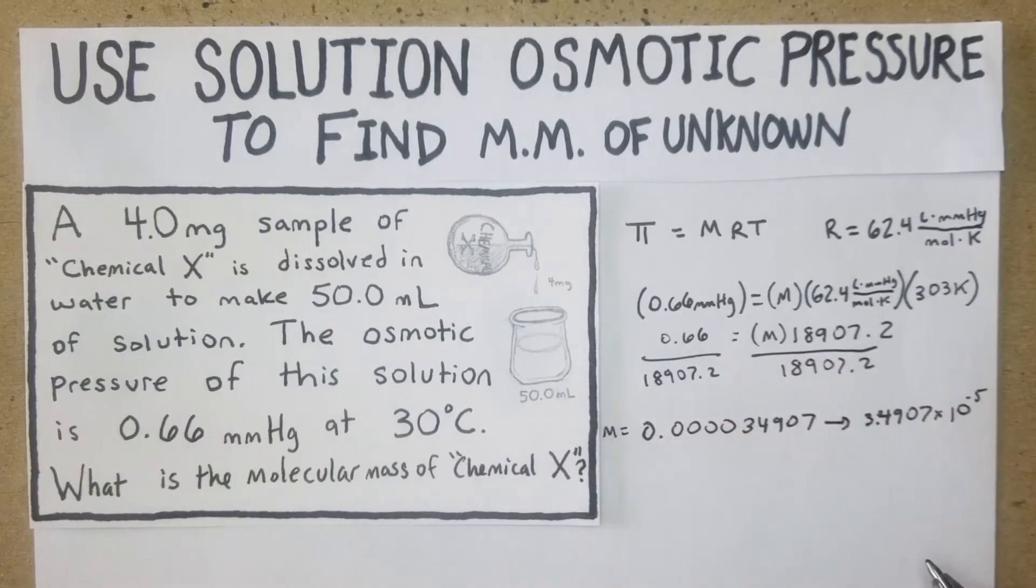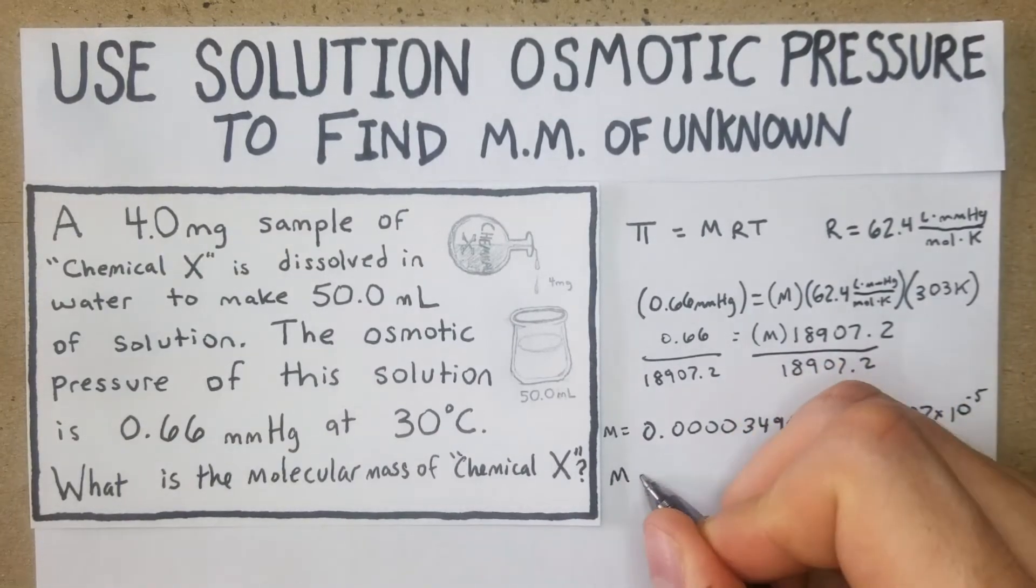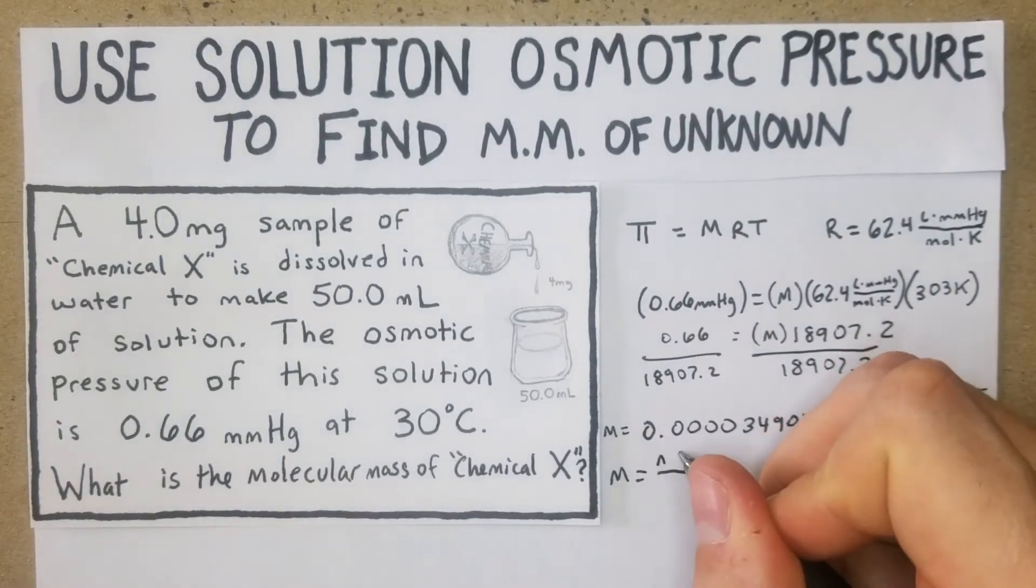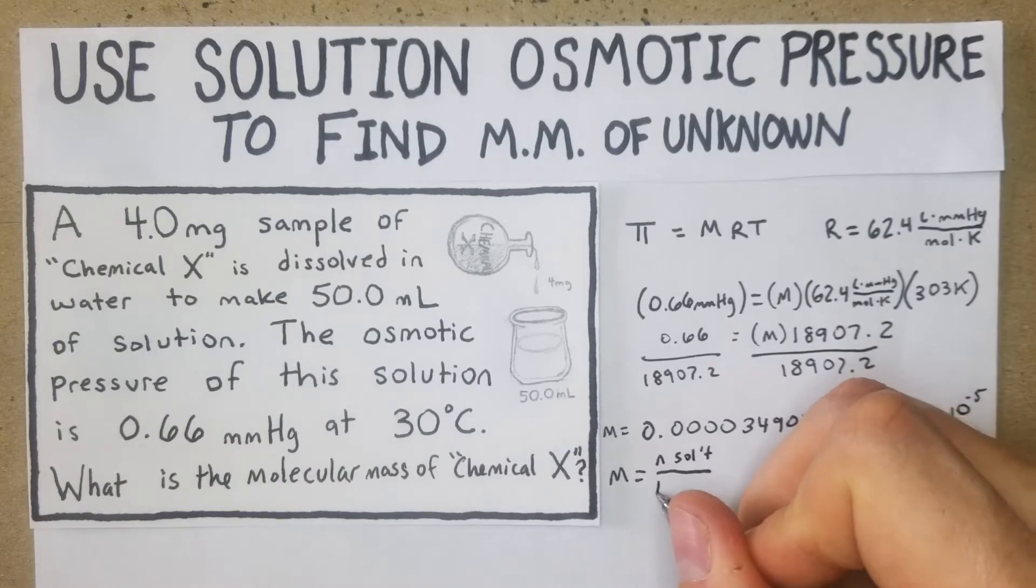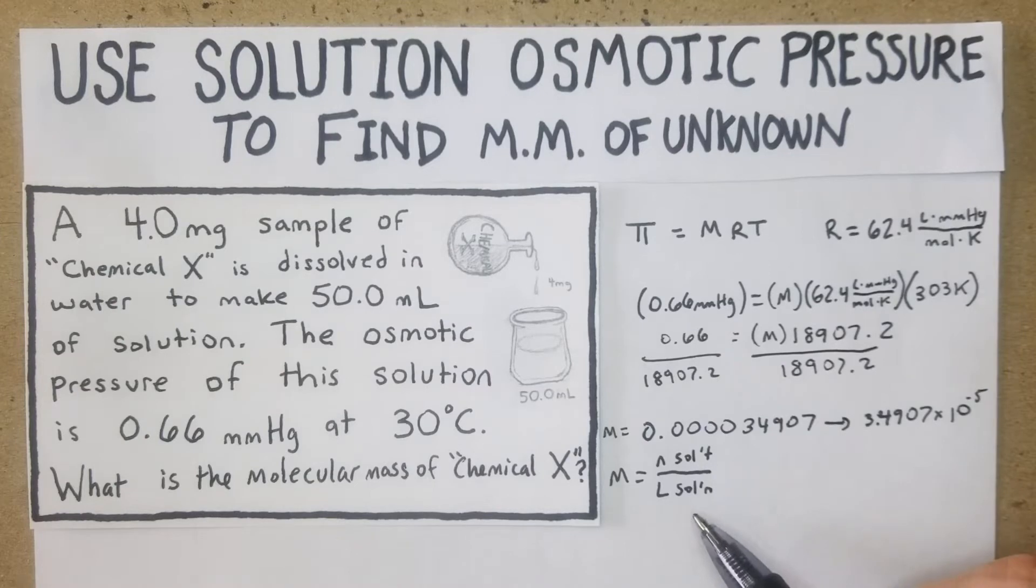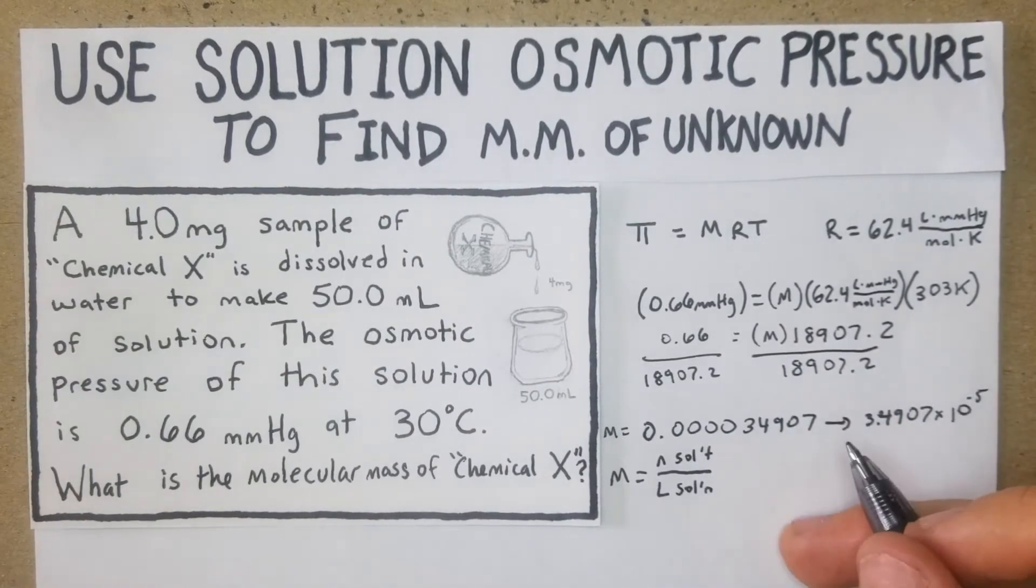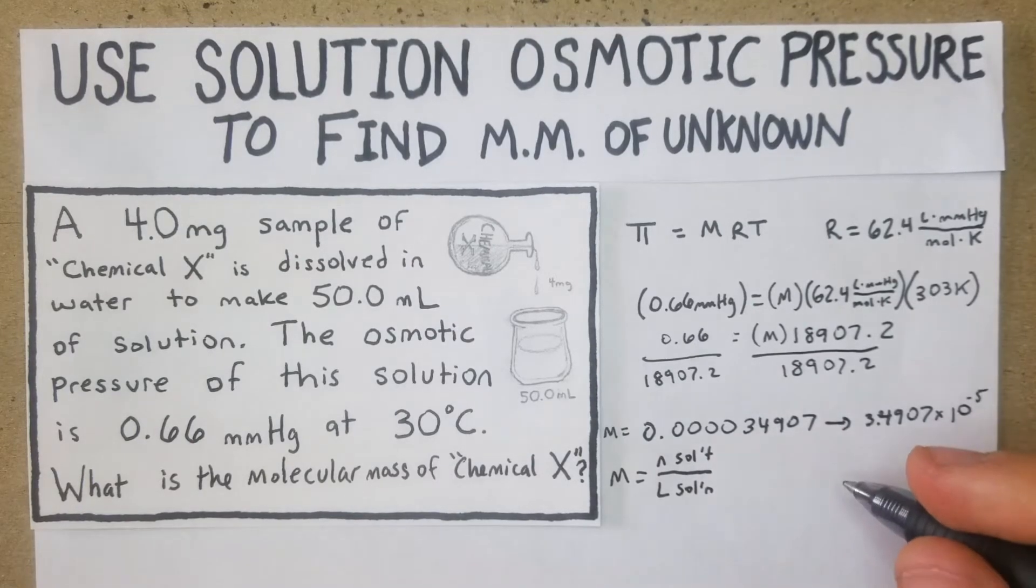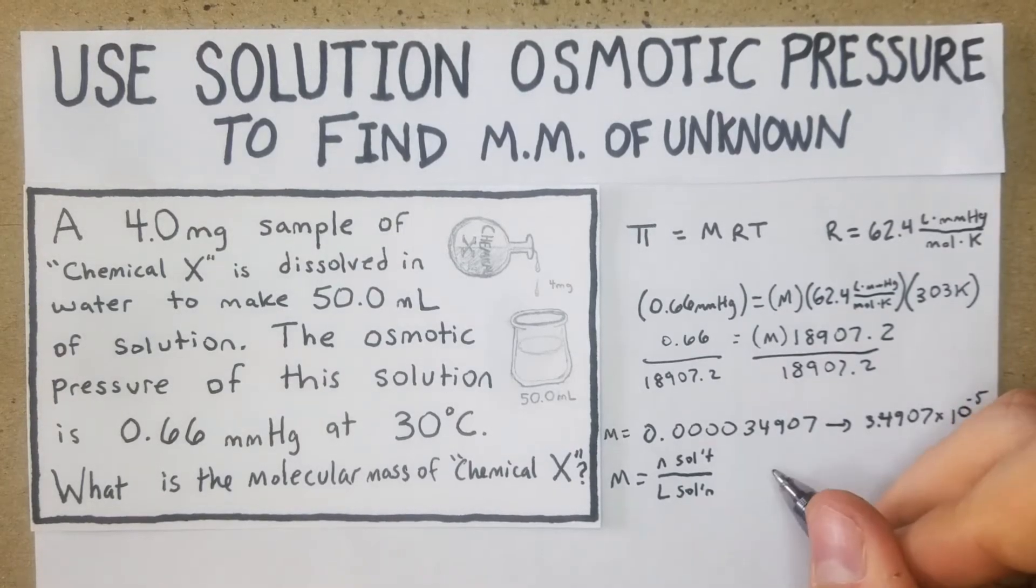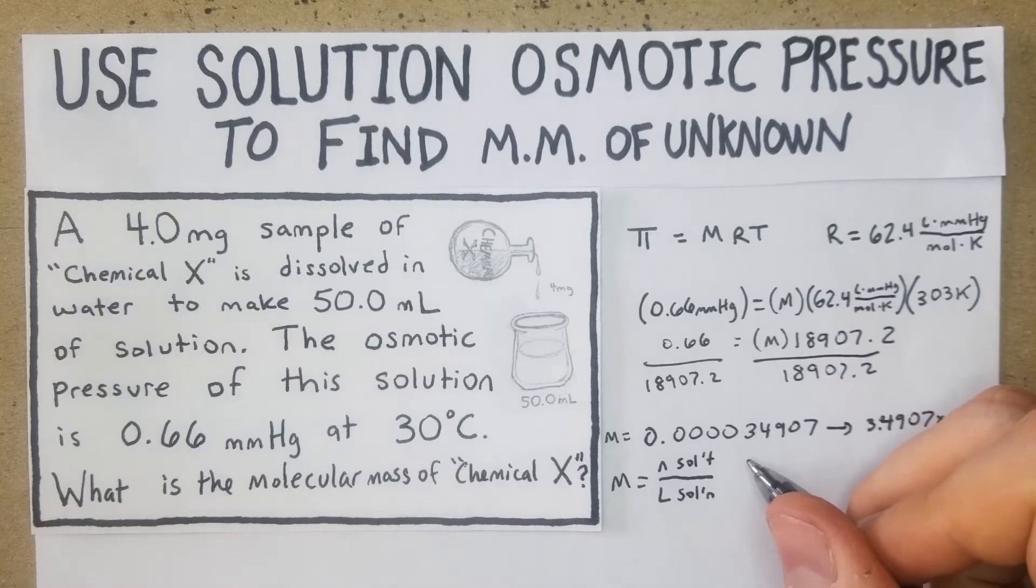All right, cool. So now we have a number that we can use - this is our M value. What we're going to do now is check out the equation that we got comfortable with in the last few videos: molarity equals the moles of solute over the liters of solution. Now we're going to try to see what we can do here. We have our molarity right there.